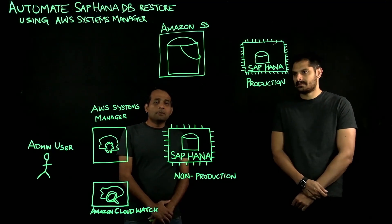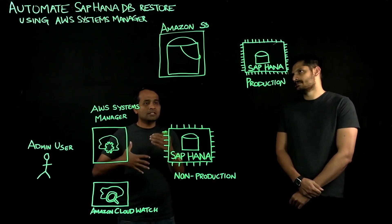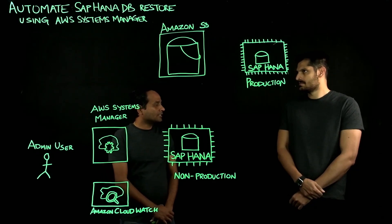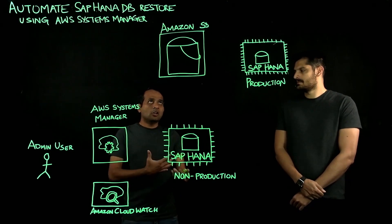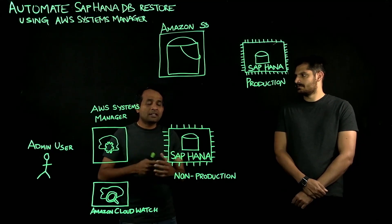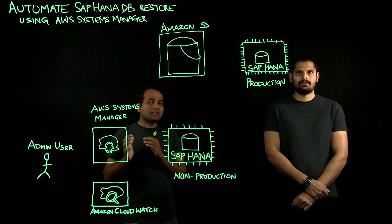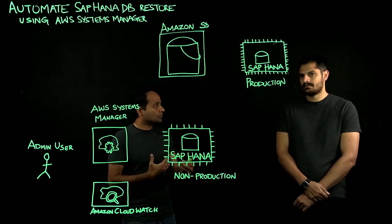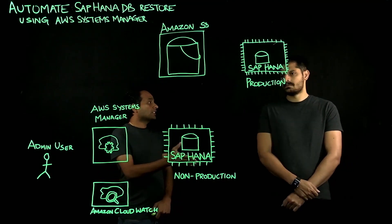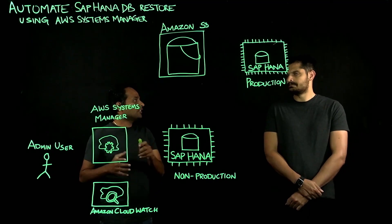Thanks for asking that question. Before I start answering how we can solve that challenge, I want to give a brief background by explaining what we created for SAP HANA databases. In 2019, we launched a service called AWS Backend Agent for SAP HANA database. This application is a SAP certified application that runs on your Amazon EC2 instances, which helps you to take your backups and store them directly in Amazon S3 bucket, which improves your operational excellence as well as helps you secure your backups.